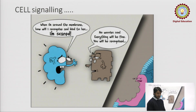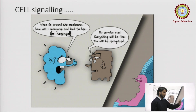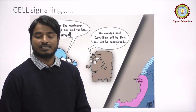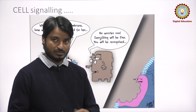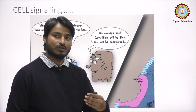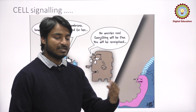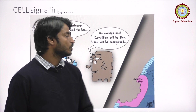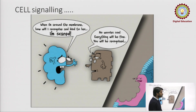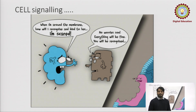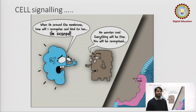Cell signalling is simple. Like when we signal something, the person will react — like we have a red light signal, yellow light, orange light, and green light. In red light we stop, in green light we go. Here also, some molecules help in the communication of the cell, because the cell requires communication between cells for the proper functioning of various biochemical processes in our life.